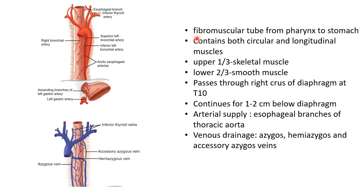The esophagus is a fibromuscular tube from the pharynx to the stomach. It contains both circular and longitudinal muscles. The upper one third of the esophagus has skeletal muscles and the lower two thirds has smooth muscles.